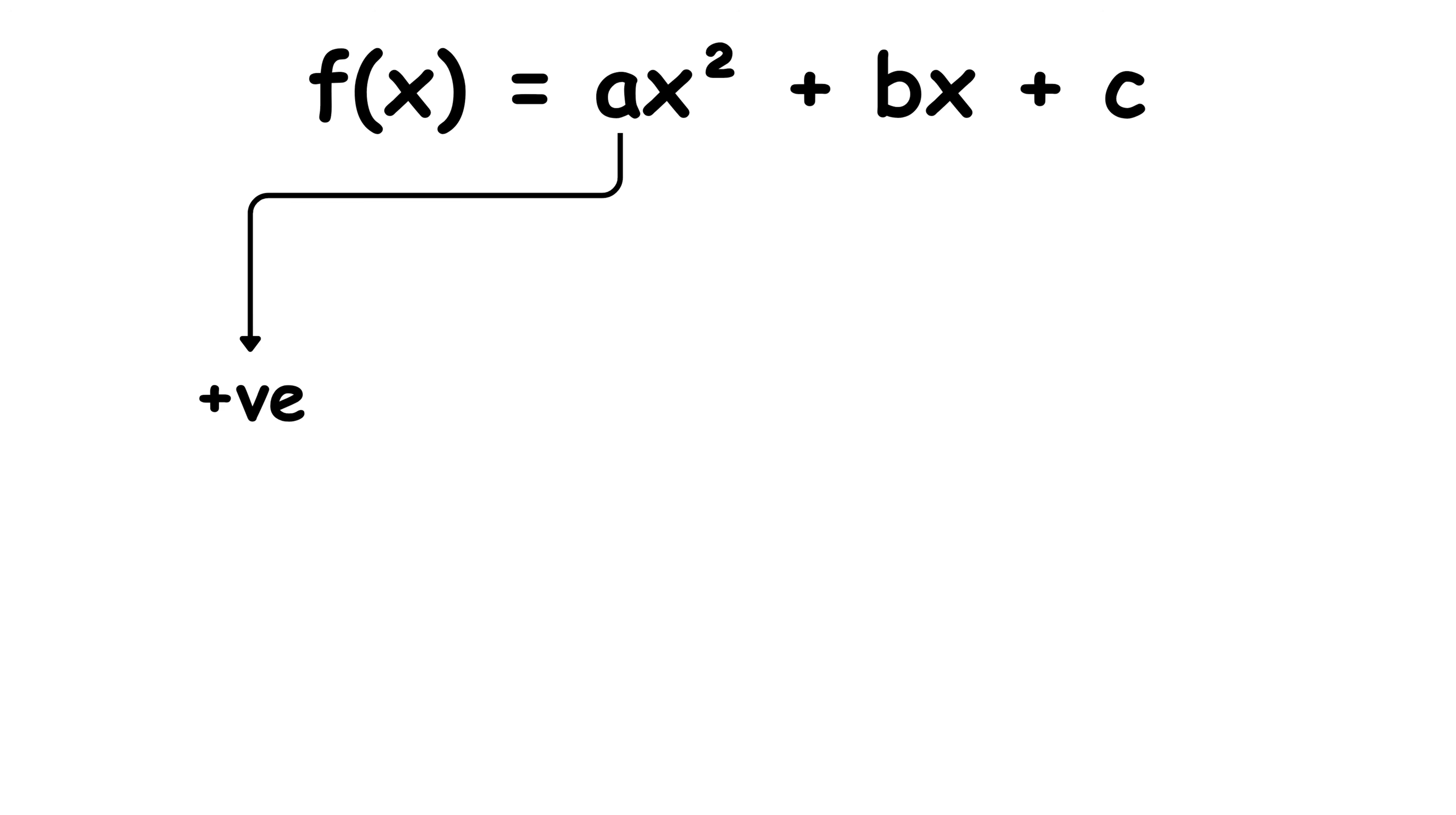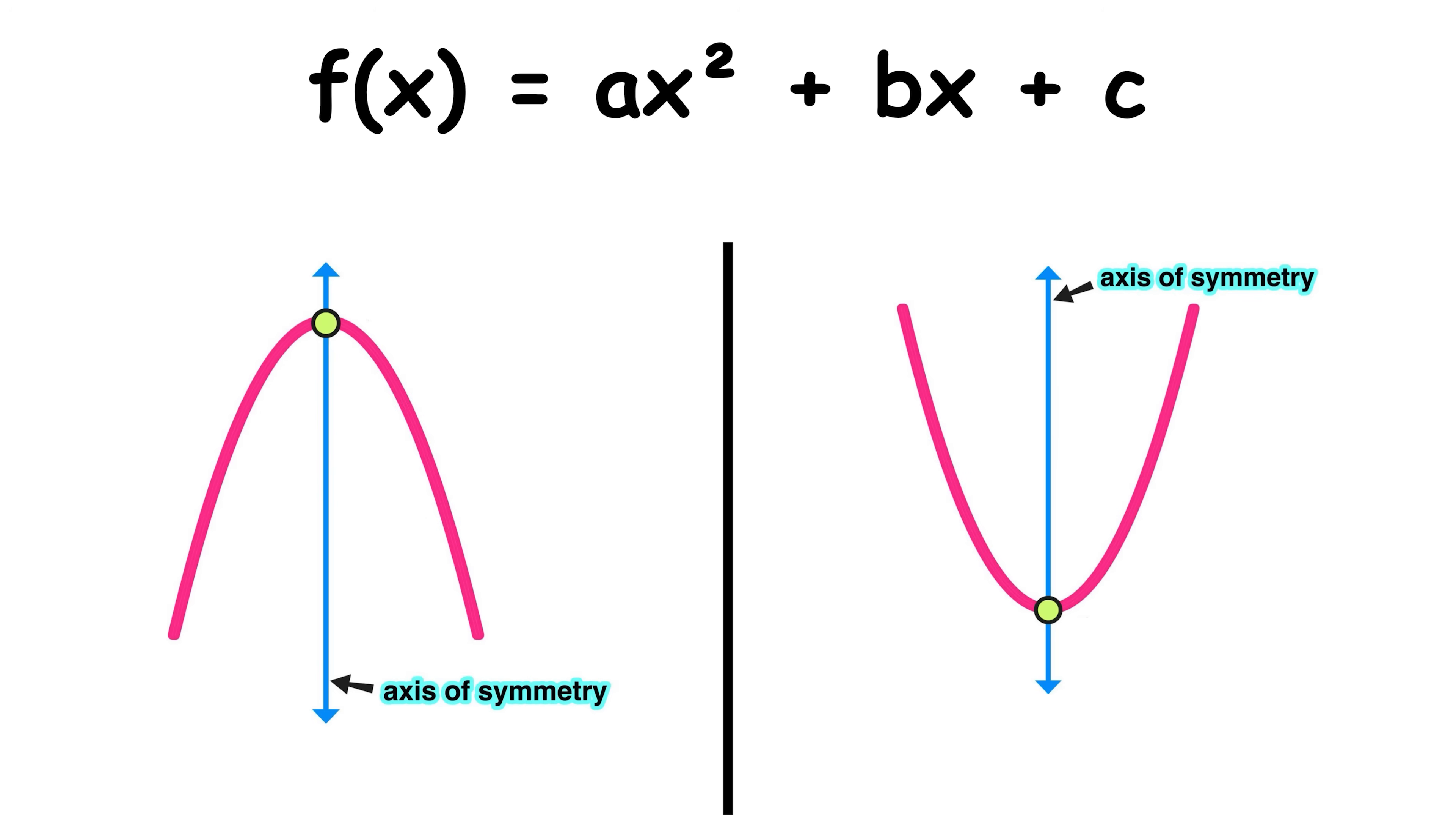If a is positive, it opens upward. If negative, downward. The highest or lowest point is the vertex.